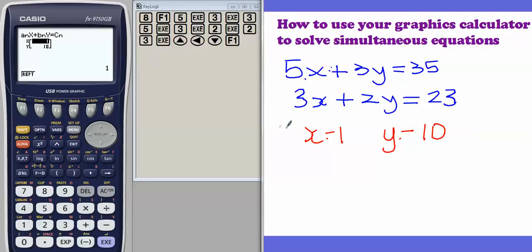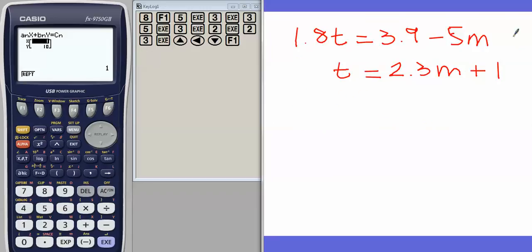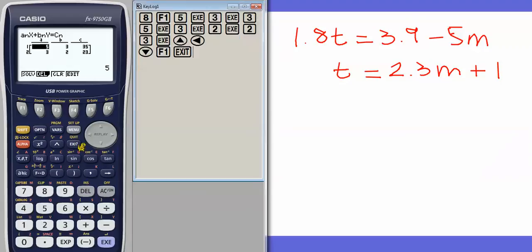Now, if we want to do a slightly more complicated one, so often you'll get these in, say, mechanics, where you've worked out some value. And instead of having nice whole number coefficients, you have decimals. Then this is when using a graphics calculator is perfect. So going back, we're doing two unknowns. Now obviously the issue here, and we can clear these if we want to, is that these are currently not in the right format.